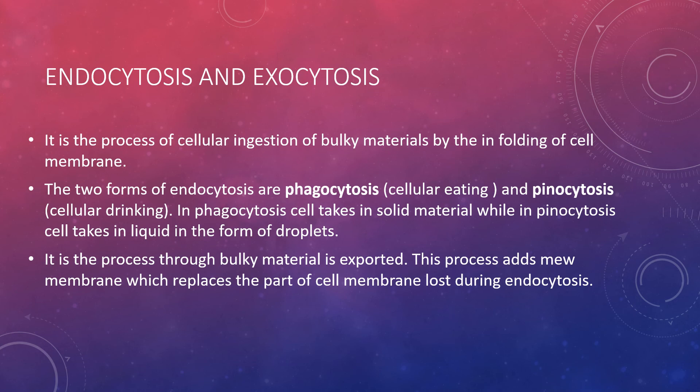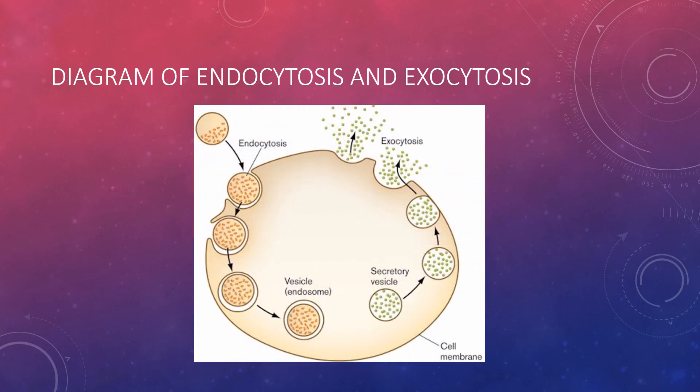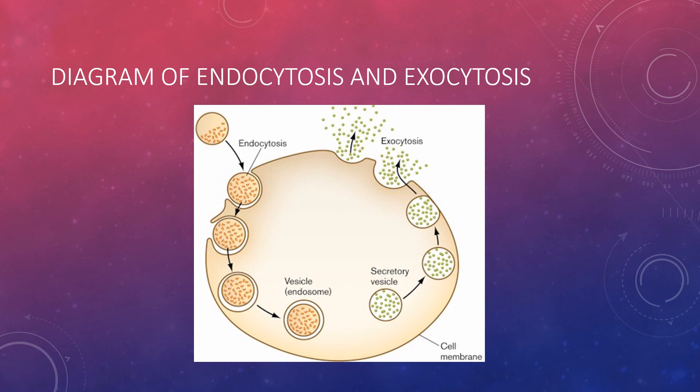On the next slide there is a diagram of endocytosis and exocytosis. In this diagram you can see that by the process of endocytosis, bulky material is added into the cell, and by the process of exocytosis, bulky material is exported out of the cell. Very large molecules are added by the process of endocytosis and very large molecules are exported by the process of exocytosis.